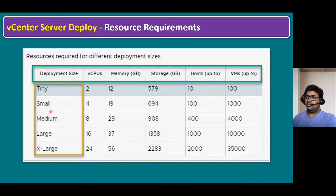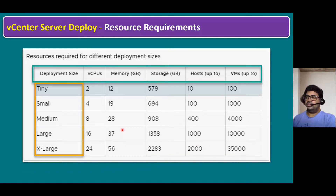If you quickly compare small, medium, and large: small means our infrastructure supports a maximum of up to 100 ESXi hosts. Medium means up to 400 ESXi hosts. Large means up to 1,000 ESXi hosts. If your infrastructure has more than 1,000 ESXi hosts, it's considered an x-large infrastructure. This basic point we're already aware of.